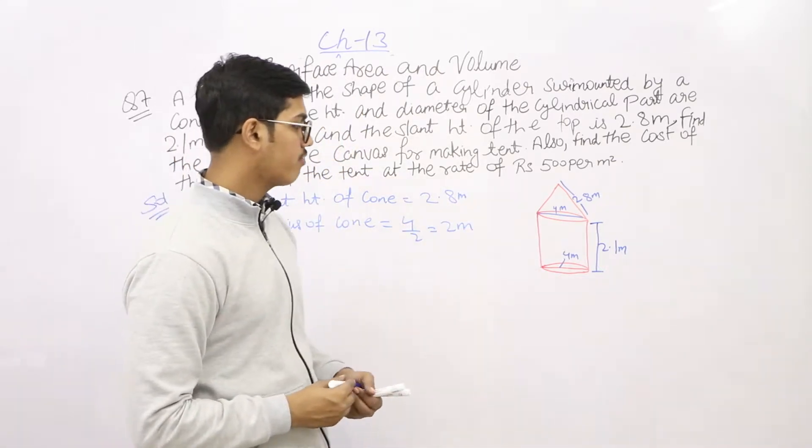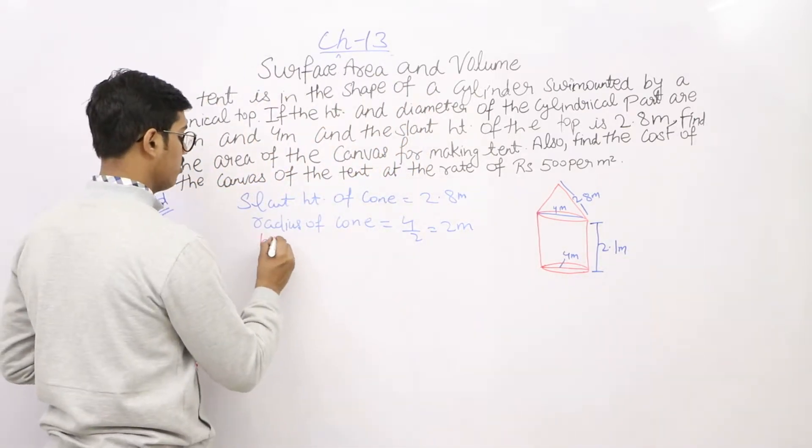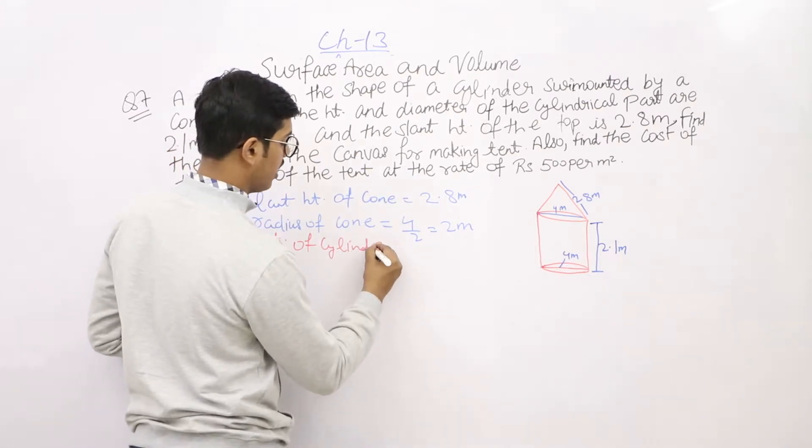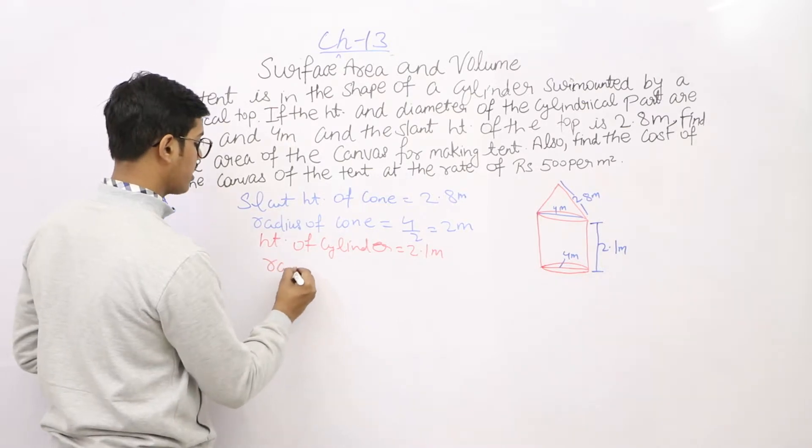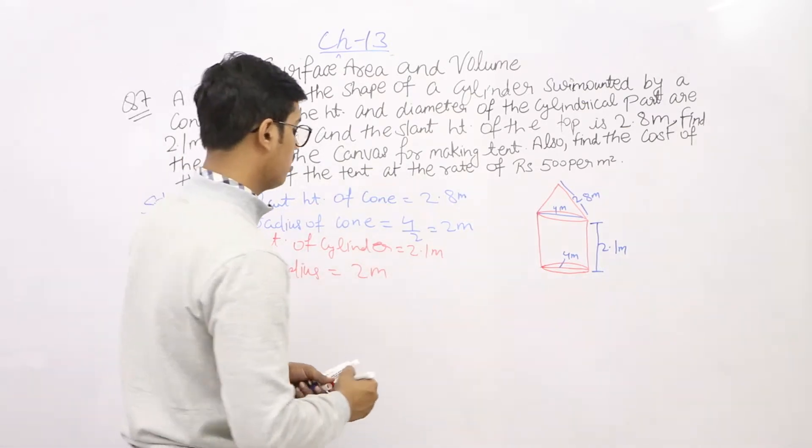Radius of cylinder is 2 meter, height of cylinder is 2.1 meter. Surface area...